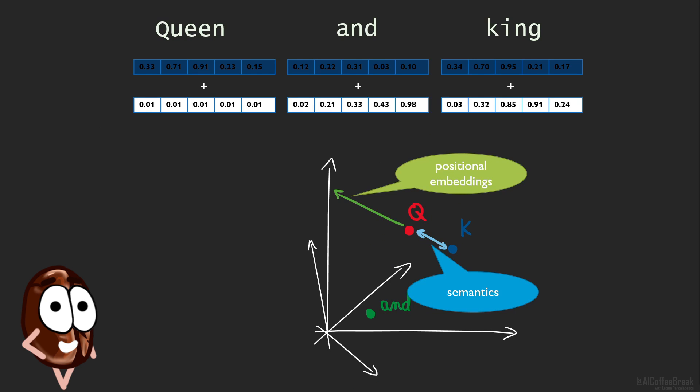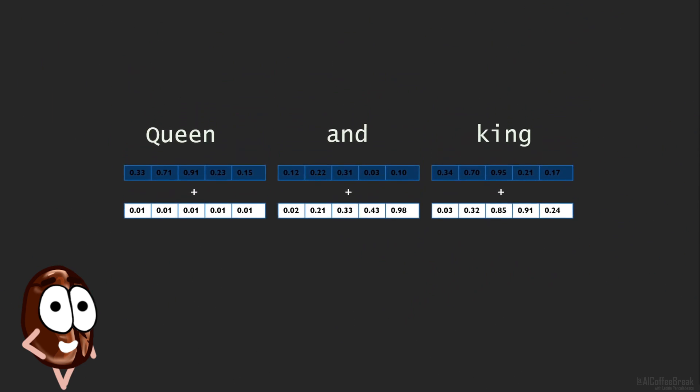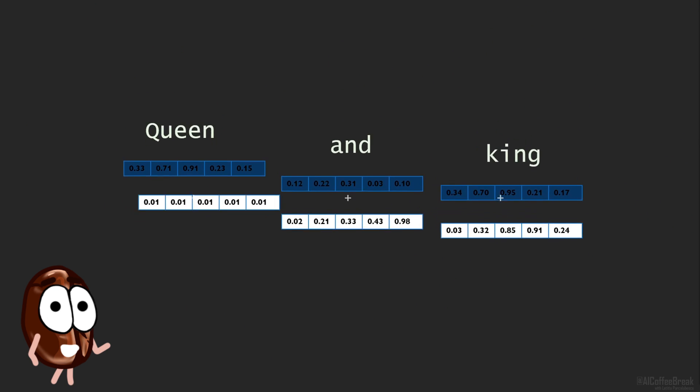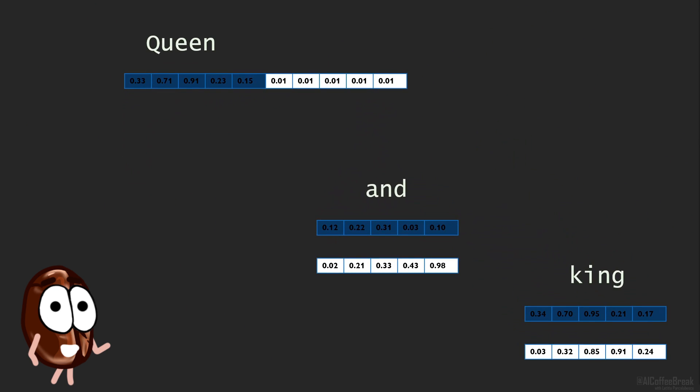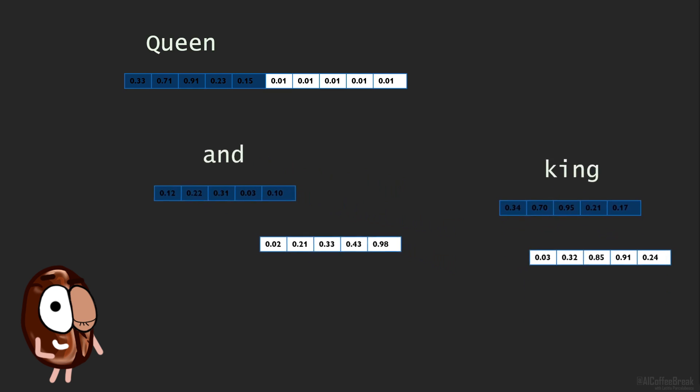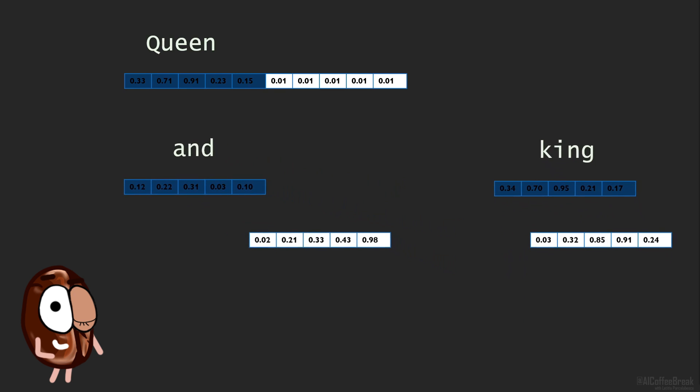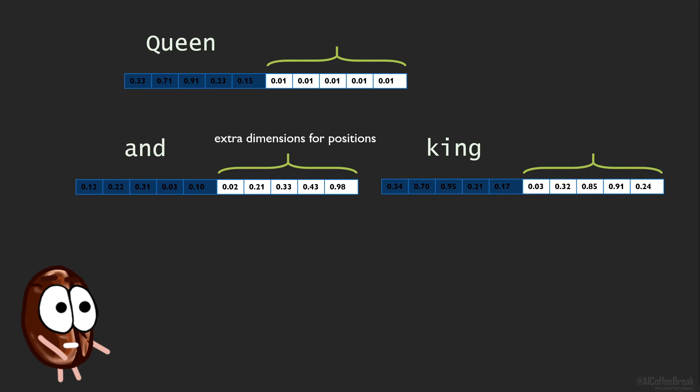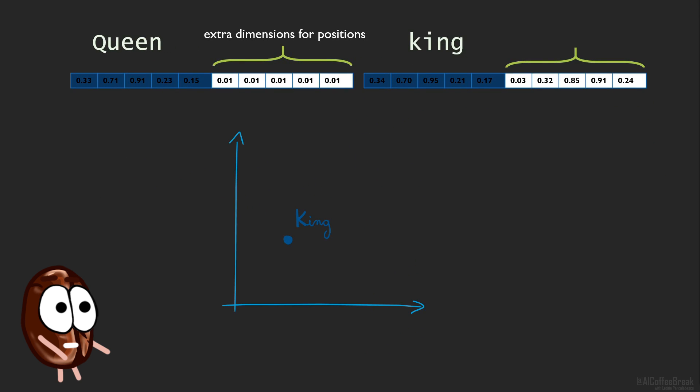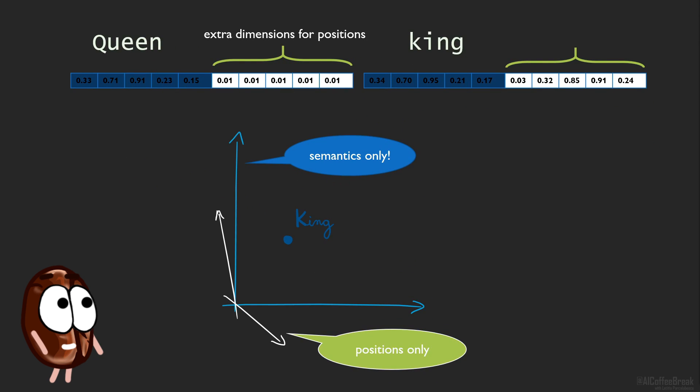Of course, people have been also trying other things to counter this, like concatenating positional embeddings instead of adding them. This opens a whole new dimension of possibilities, quite literally. Now, the semantic information has its own dimensions to live in, and positional information is encoded somewhere else, in an orthogonal, unrelated space to the semantic one. This completely avoids information mess, but comes at a cost.